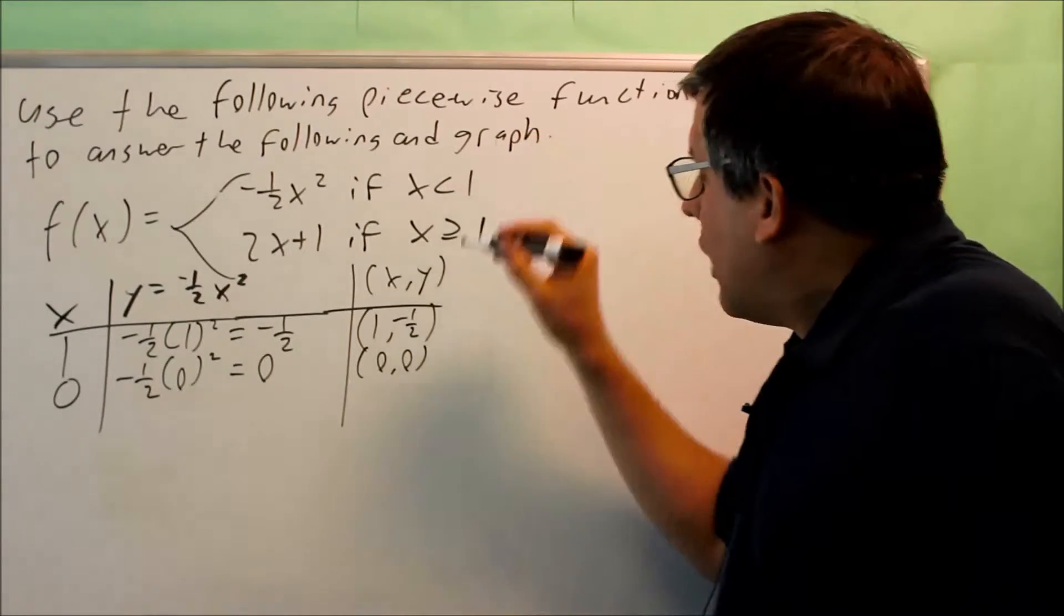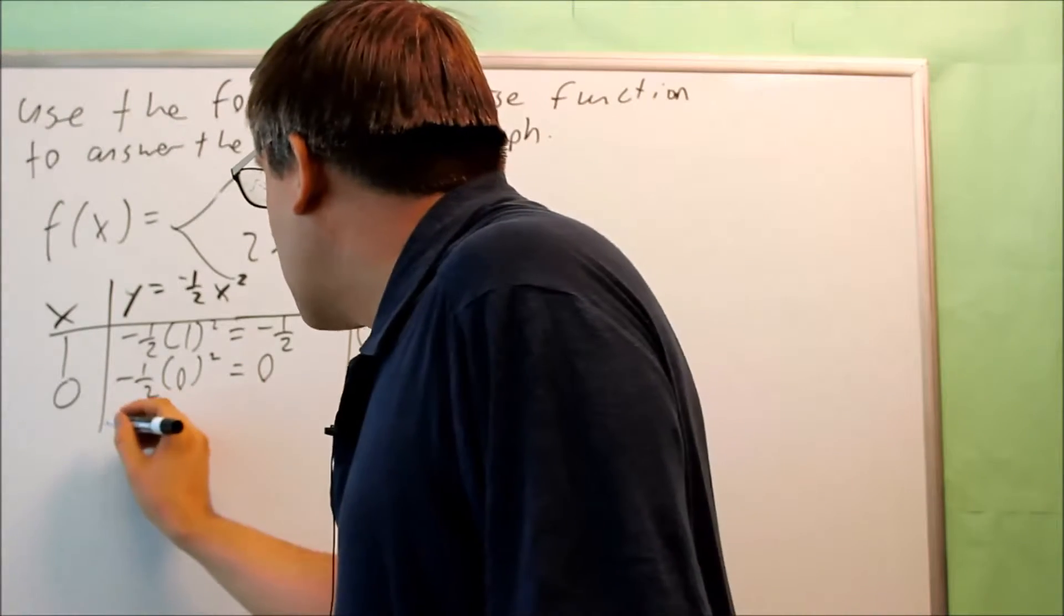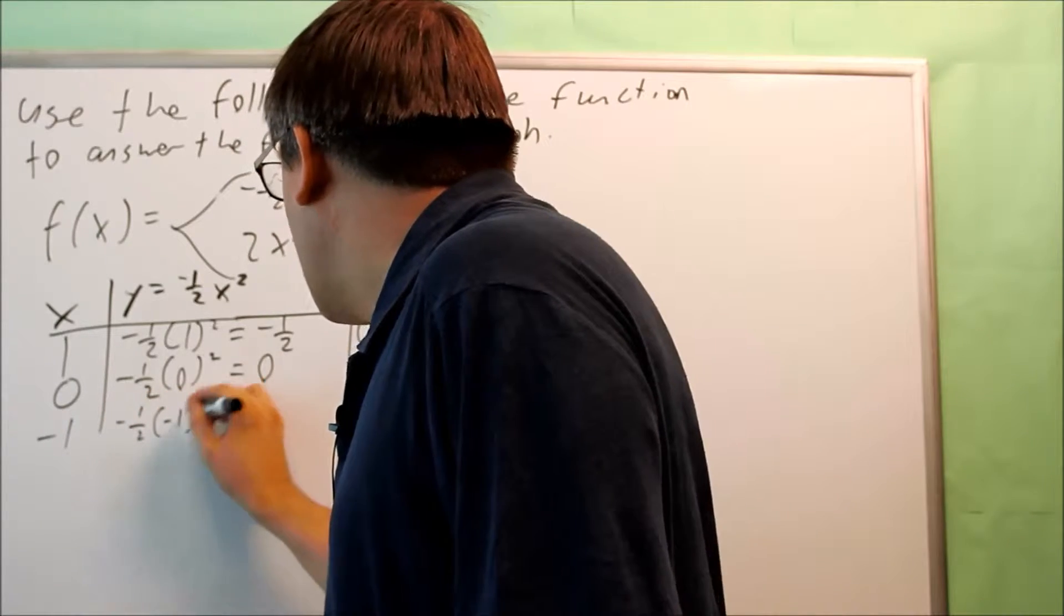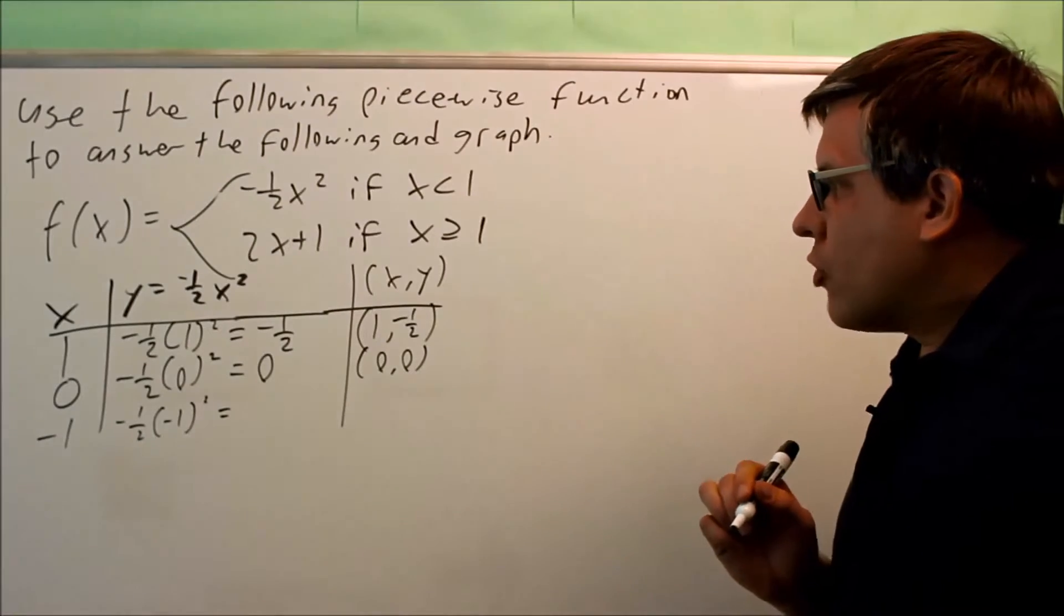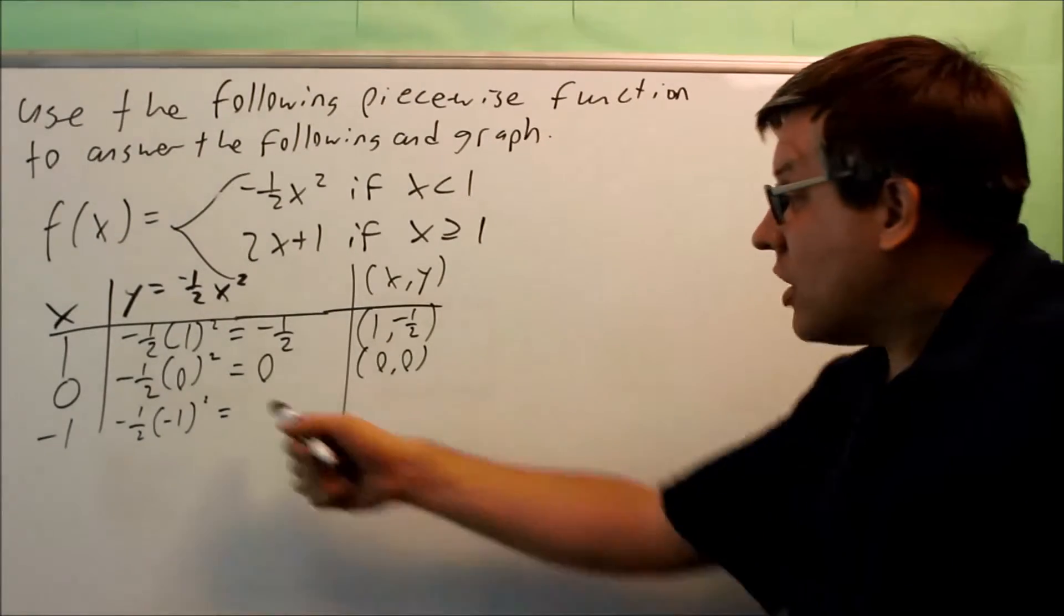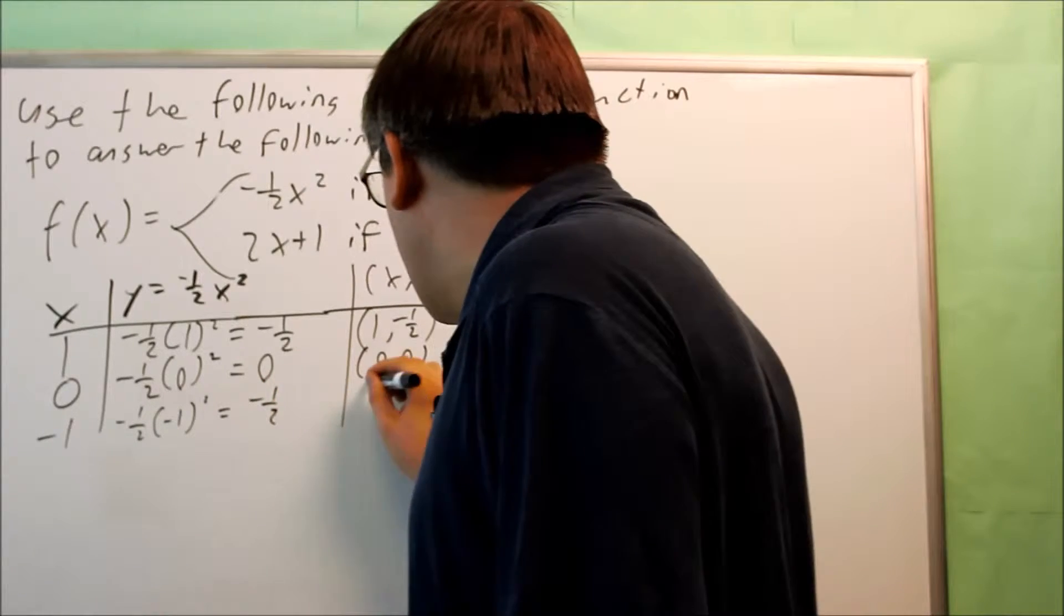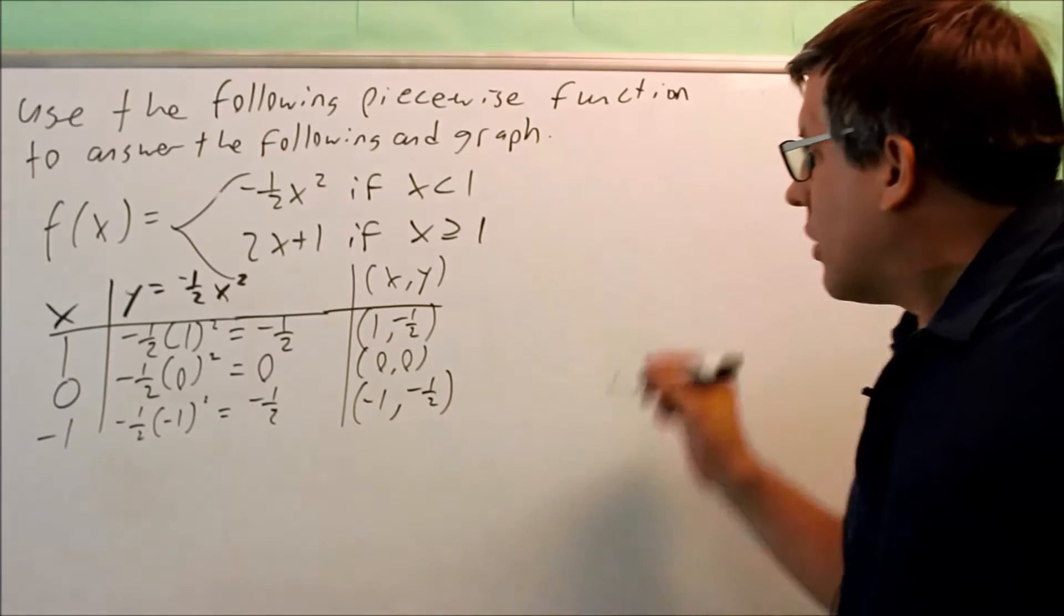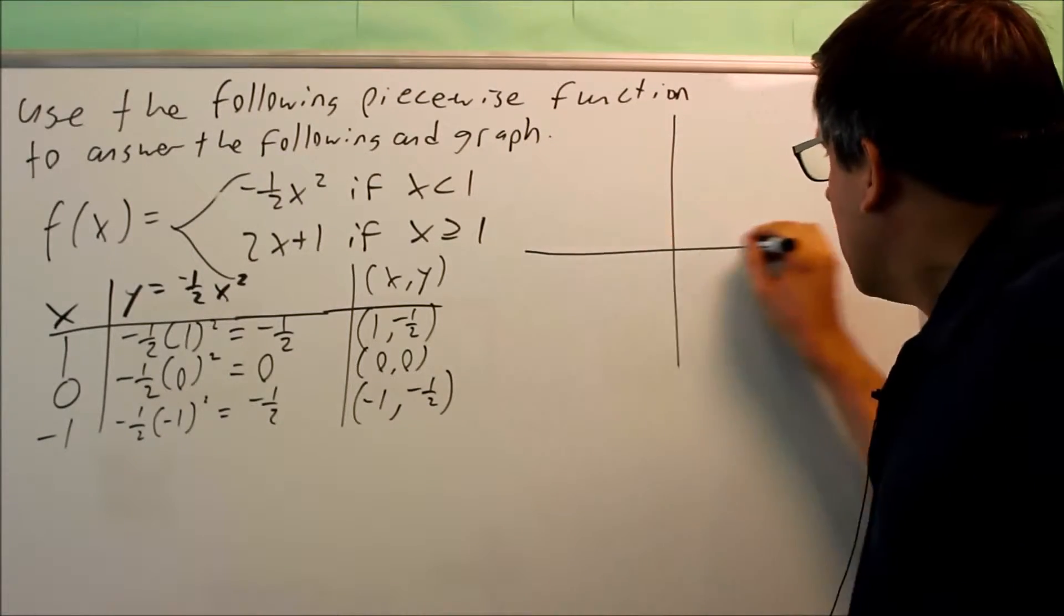Let's try another one. Any point that's less than 1, I'm going to use negative 1 here. Negative 1 times negative 1 squared. We actually did that one previously. That was part A. This gives us negative 1 half, so you get negative 1 and negative 1 half. Let's take a look now at what the graph will be with these points.